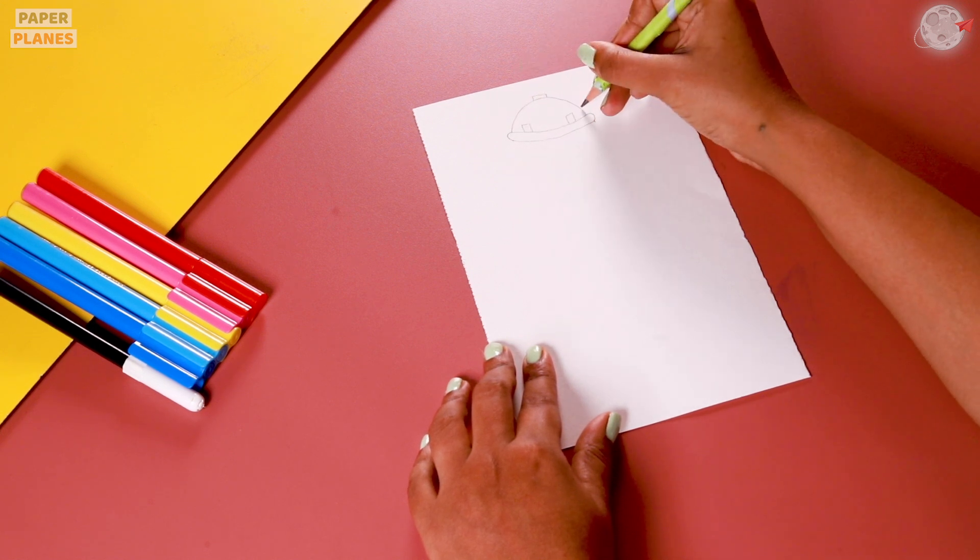For the shoulders, let's make two slanting lines and then two standing lines. Once we are done with that, why don't we join it with a sleeping line?